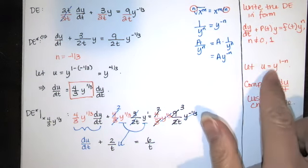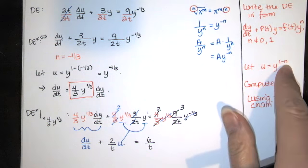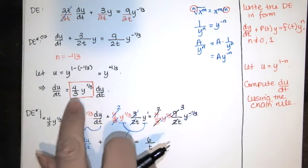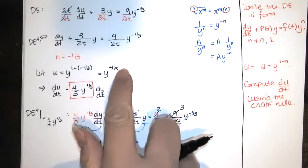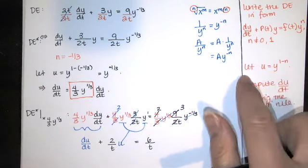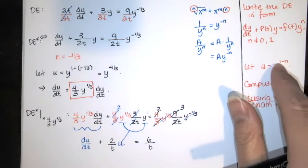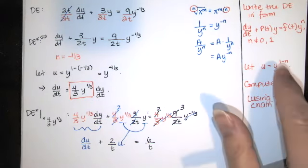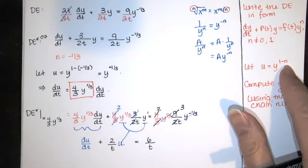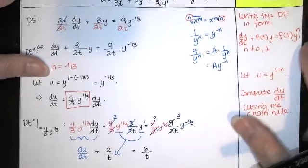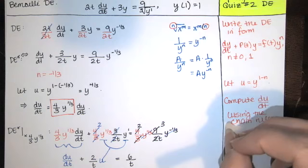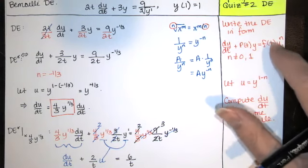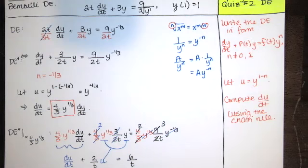That will always happen. If u is y to the 1 minus n, the derivative of u with respect to y will always have a 1 minus n times y to the 1 minus n minus 1, so you'll always have a y to the negative n here. That's why we use this substitution — because the derivative of this will always have a y to the negative n, and the y to the negative n times that y to the positive n at the end will cancel, giving us that first-order linear equation in u that we were looking for.